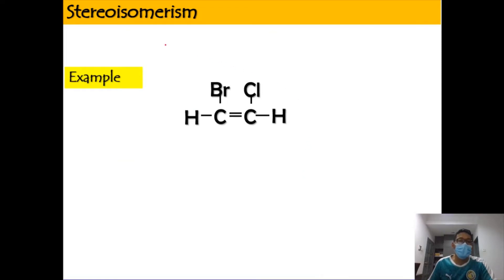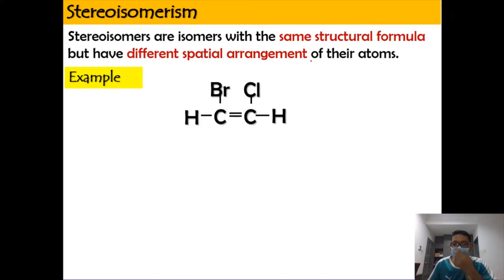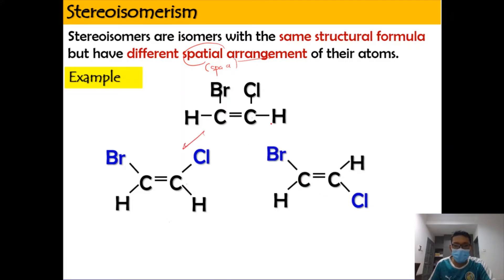Stereoisomers are isomers with the same structural formula but different spatial arrangement — 'spatial' meaning in space. For example, consider a carbon-carbon double bond where the first carbon is attached with bromine and hydrogen, and the second carbon is attached with chlorine and hydrogen. We will have two structures that are the same in connectivity.